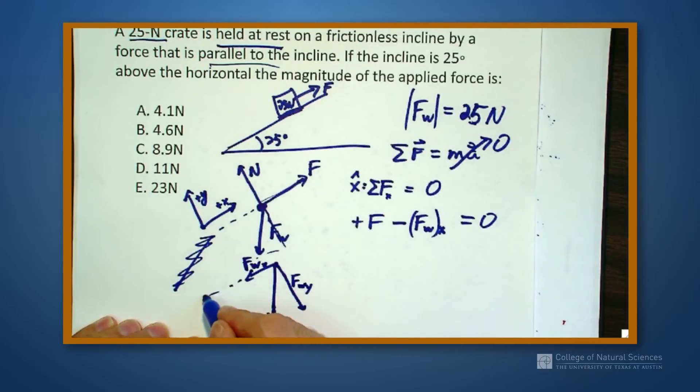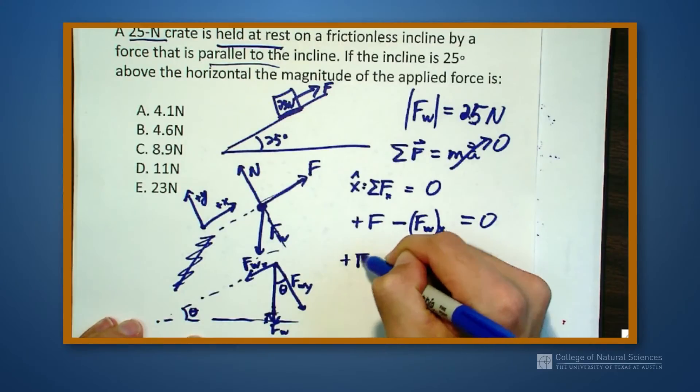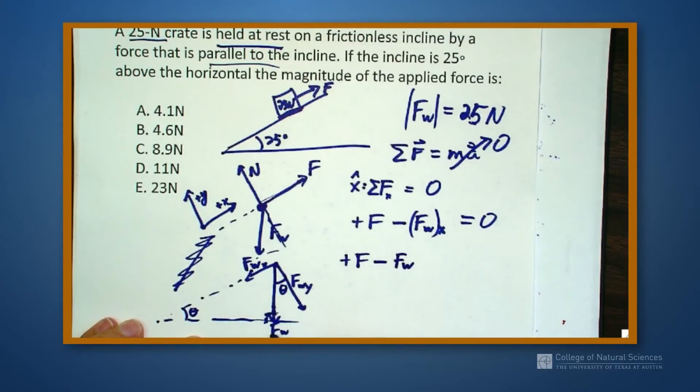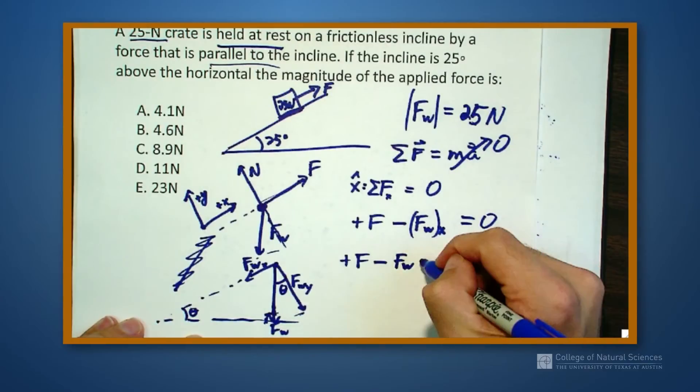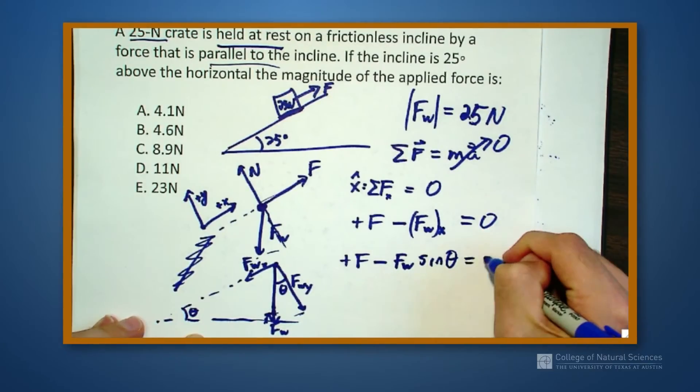I know that if I were to extend this triangle out that this is perpendicular. This is 25 degrees. That means this is 90 minus 25 because it has to add up to 180 degrees, which means that this angle right there has to be theta as well. So I get plus F over here again minus my weight force times the sine because I'm looking for the opposite. This guy right here is the opposite of it. So I need the sine of theta is equal to zero.